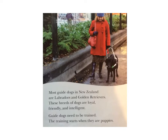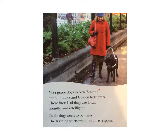Now let's look at the second page of the story. You can see that on this page there are two paragraphs. We can see the difference between the paragraphs because there's a gap in between the writing. The first paragraph says: Most guide dogs in New Zealand are Labradors and Golden Retrievers. These breeds of dogs are loyal, friendly and intelligent. This paragraph is all about the kind of dogs that are guide dogs.